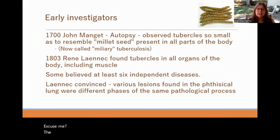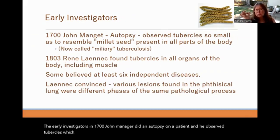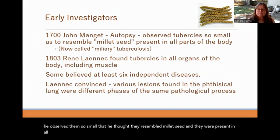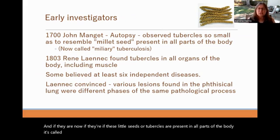Early investigators in 1700 — John Magier — did an autopsy on a patient and observed tubercles so small that he thought they resembled millet seed, and they were present in all parts of the body. When these little seeds or tubercles are present throughout the body, it is called miliary tuberculosis, named after the millet seed.